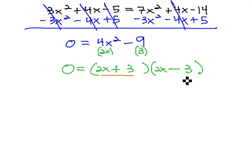Now that it's factored, we can set each factor equal to 0. 2x plus 3 equals 0, and 2x minus 3 equals 0, and solve the resulting equations.